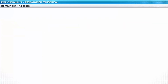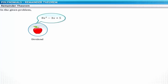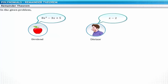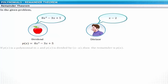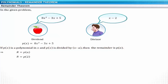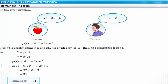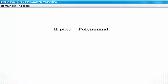Let's apply the theorem to solve our problem. The dividend is 8x squared minus 3x plus 5, and the divisor is x minus 2. Let p of x equal to 8x squared minus 3x plus 5. According to the remainder theorem, if p of x is divided by x minus a, then the remainder is p of a. Therefore, in this problem, the remainder r is p of 2.